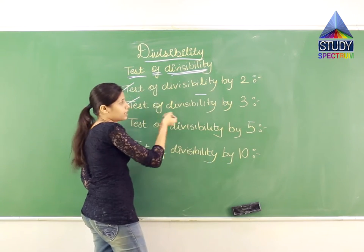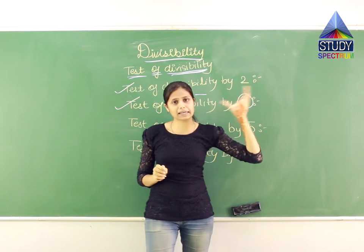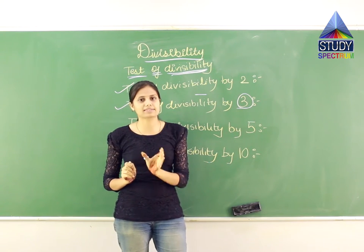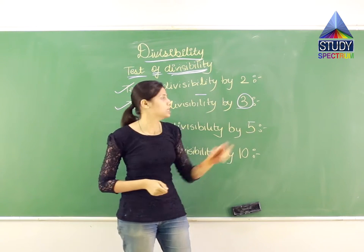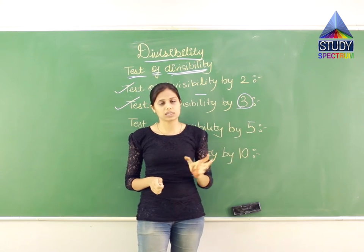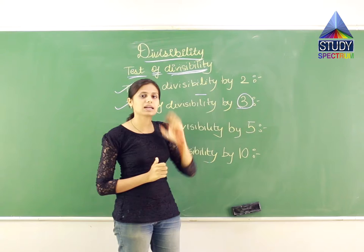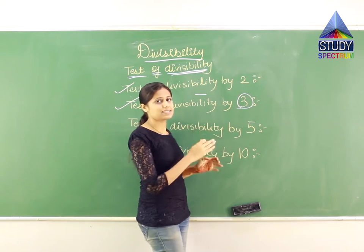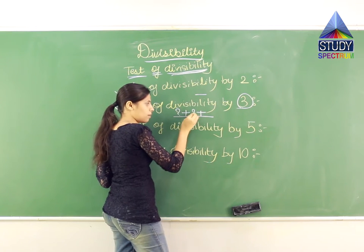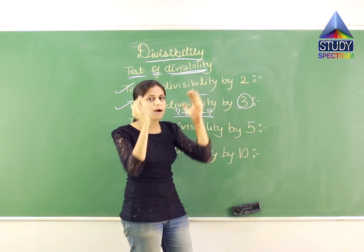Now let us move on to the second check: test of divisibility by 3. We want to know if a given number, when divided by 3, gives a natural number — i.e., does it appear in the table of 3? The test is simple: whatever number is given, add all its digits together. If the resulting sum is divisible by 3, then the whole number is divisible by 3.